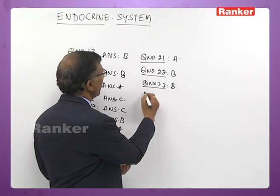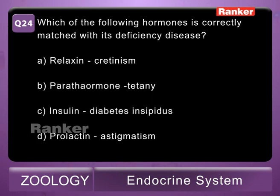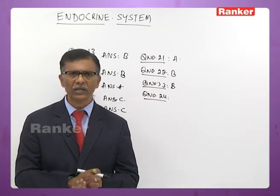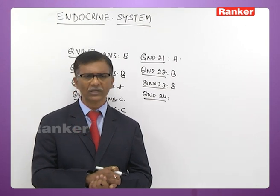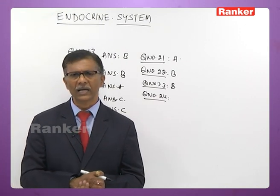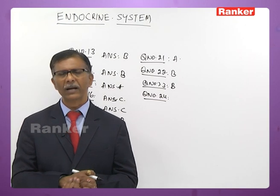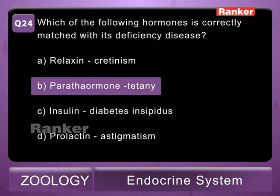Twenty-fourth question: which hormone is correctly matched with its deficiency disease? A - relaxin, cretinism; B - parathormone, tetany; C - insulin, diabetes insipidus; D - prolactin, astigmatism. Insulin deficiency causes diabetes mellitus, not insipidus — so C is wrong. Prolactin deficiency may result in lack of milk formation, not astigmatism (which is an eye disorder corrected by cylindrical lenses). Parathormone deficiency results in parathyroid tetany. The correct answer is B — parathormone, tetany.